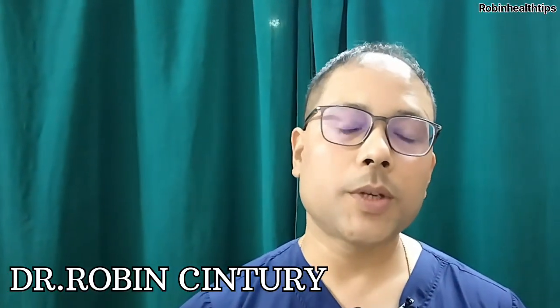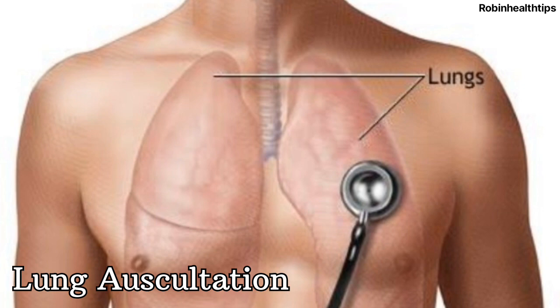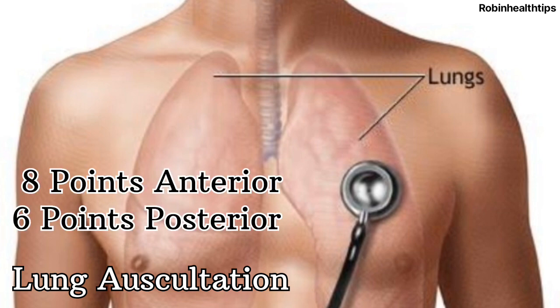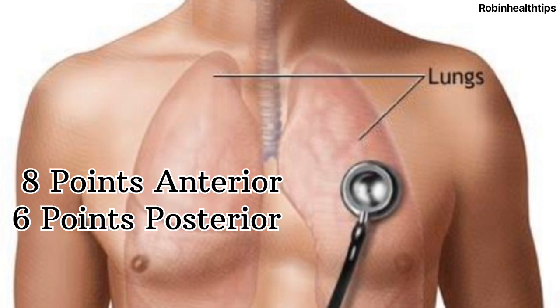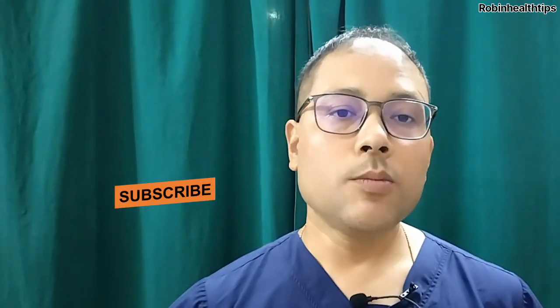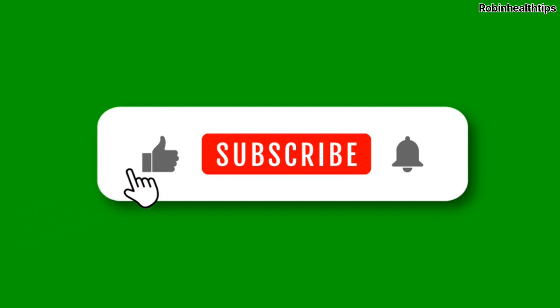Hello friends, welcome back to my YouTube channel. Today we will discuss lung auscultation - the eight points for lung auscultation anterior to the chest, and the six points posterior to the chest. If you remember these points during lung auscultation, you will never miss any lobe of the lungs. This video is made especially for medical students, interns, and those doing nursing courses or working as community nurses.